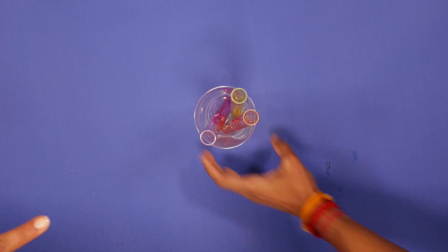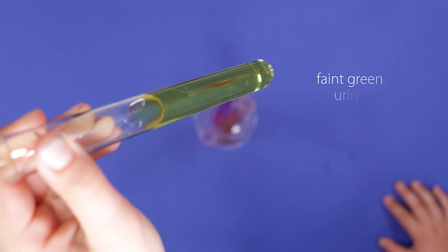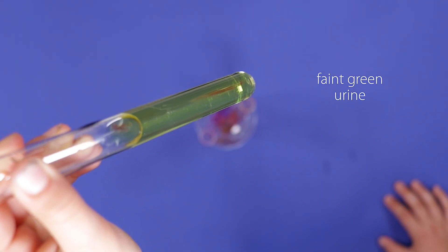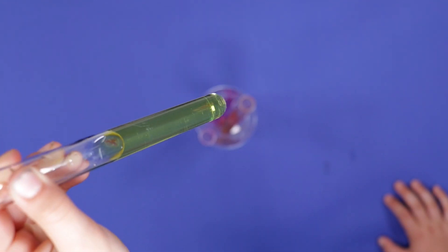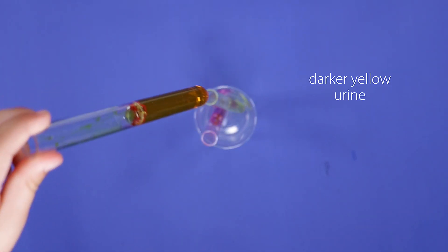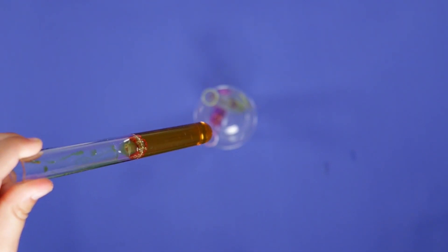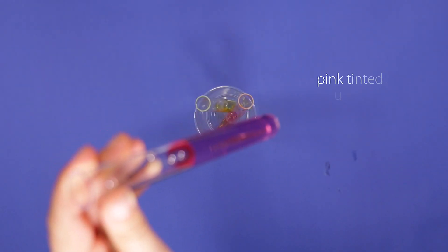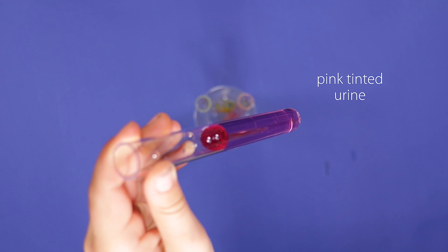We can also use a sample with a few drops of green food colouring to give a faint green urine sample, another sample that is a darker yellow than the original urine sample, and a final sample with a few drops of red or pink food colouring so that it has a slight pink tint to it.